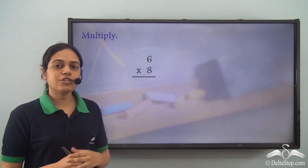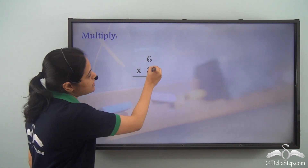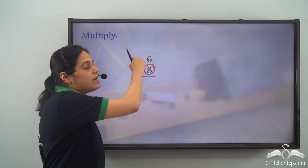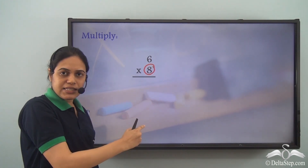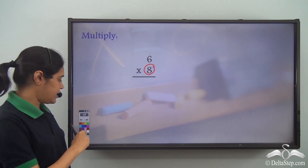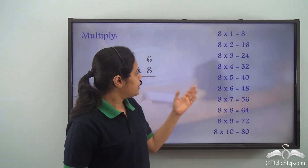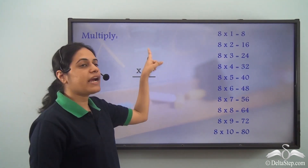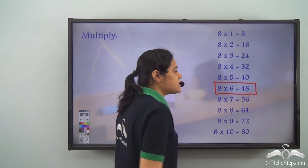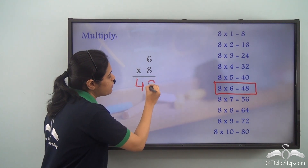Now I need to solve 6 into 8. Let us recall the table of 8 — I am multiplying 6 by 8. This is the table of 8. Now 8 multiplied by 6 gives me 48. So the answer is 48.